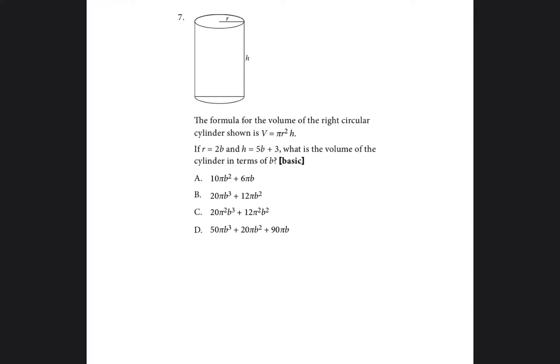Okay, so it says the formula for the volume of this right circular cylinder is V = πr²h. And then they're asking us if r is equal to 2b and h is equal to 5b plus 3, what is the volume of the cylinder in terms of b?